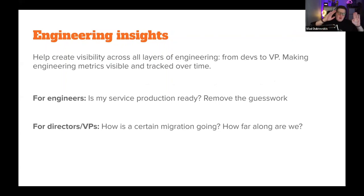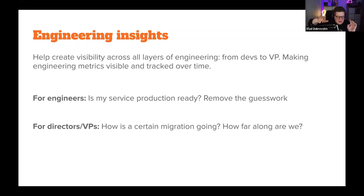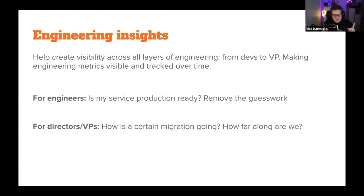We've done Dora Metrics but have loads of plans for engineering insights overall — the idea is to create visibility across all layers of engineering from devs to VP, making engineering metrics visible and tracked over time. For engineers, with Backstage you can automate most production readiness checklist checks and immediately see green or red ticks against them. For directors and VPs, you can answer questions like how a certain migration is going, or track vulnerability remediation across packages. Nothing implemented yet on this — talk to me in about six months.